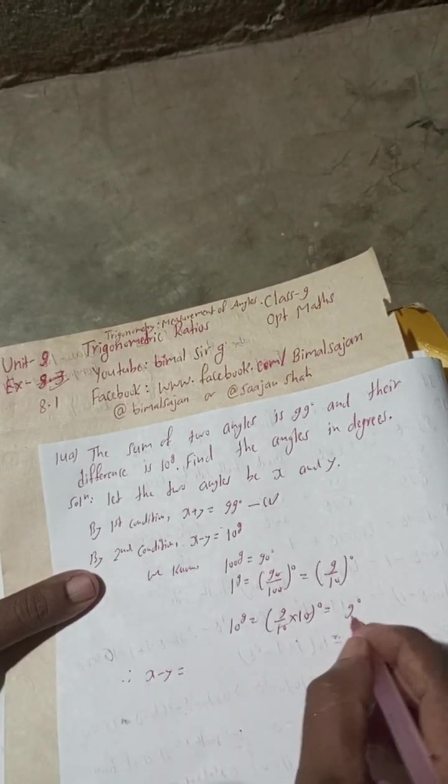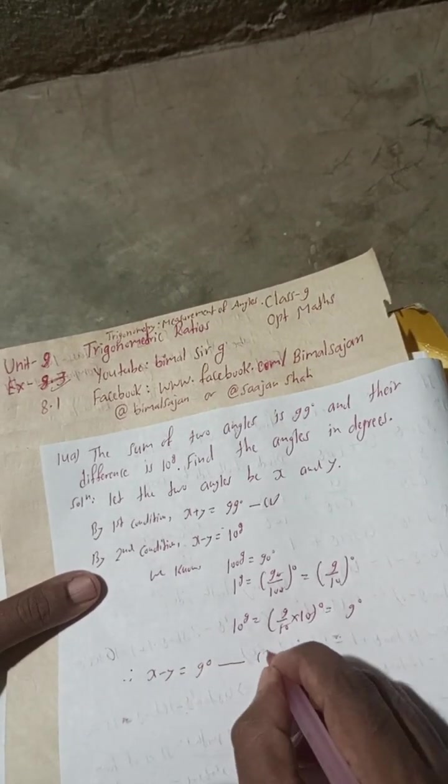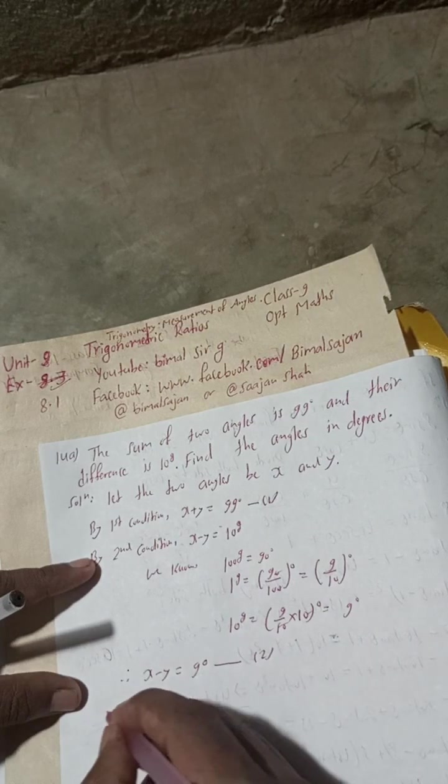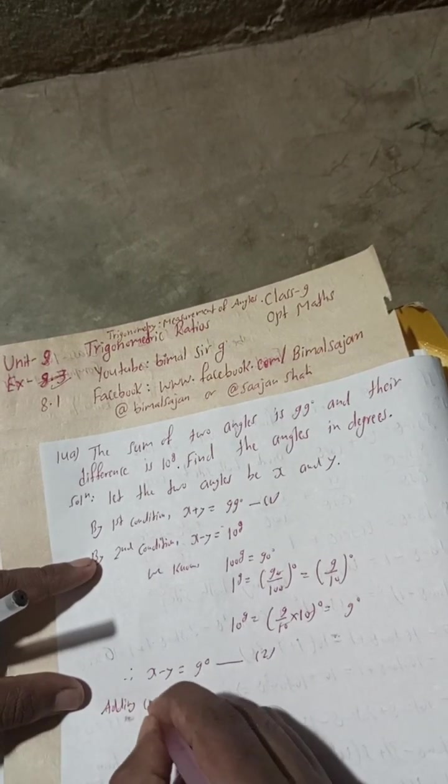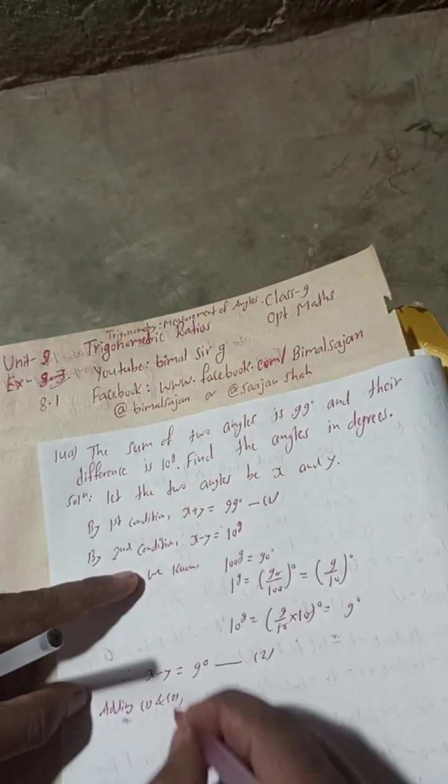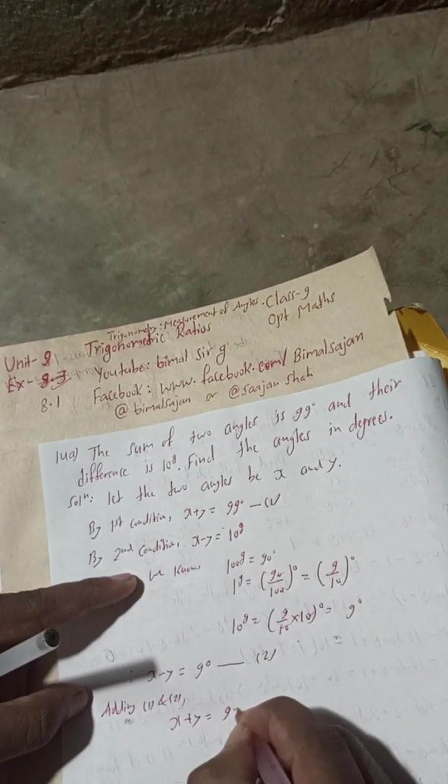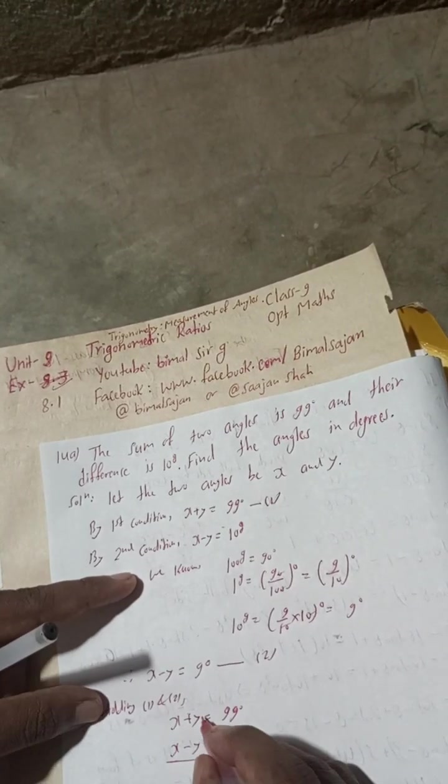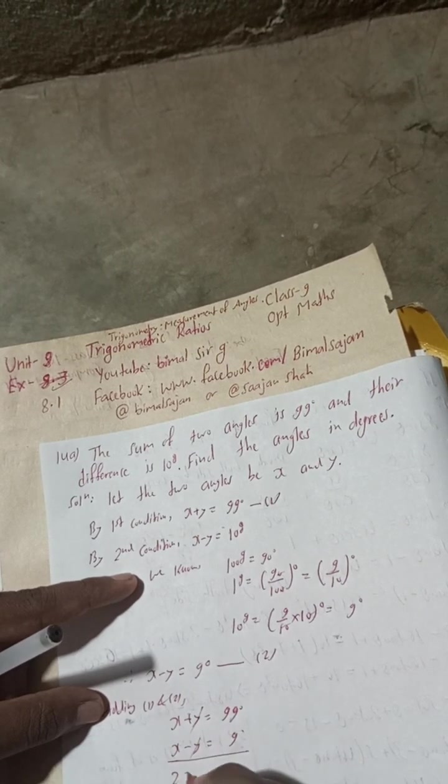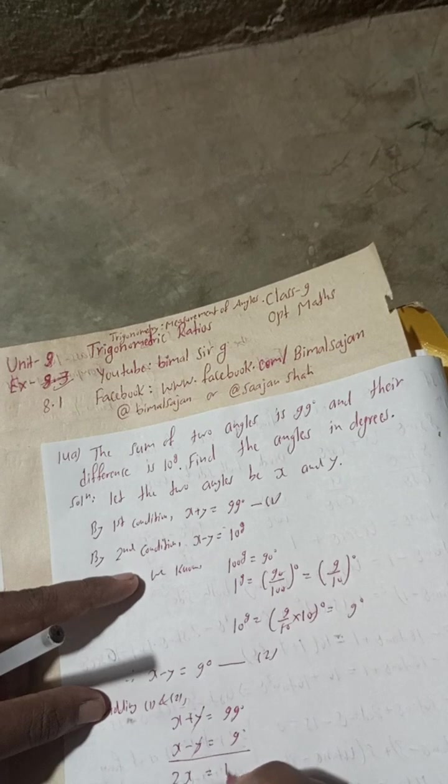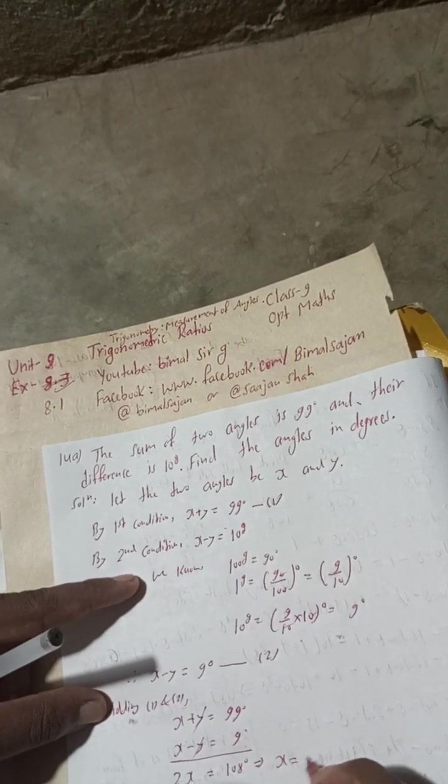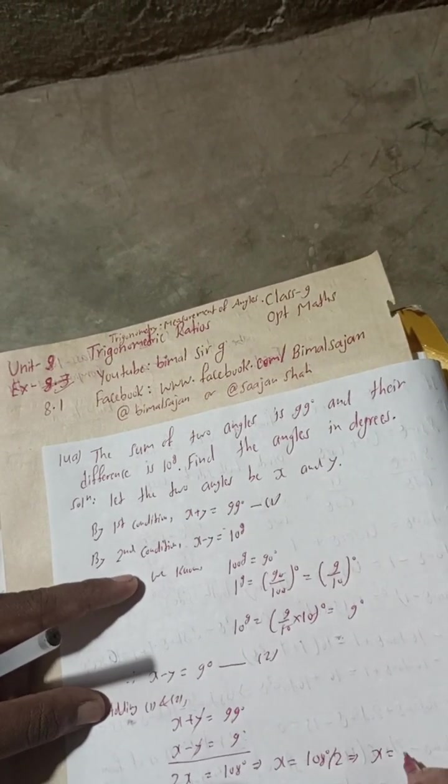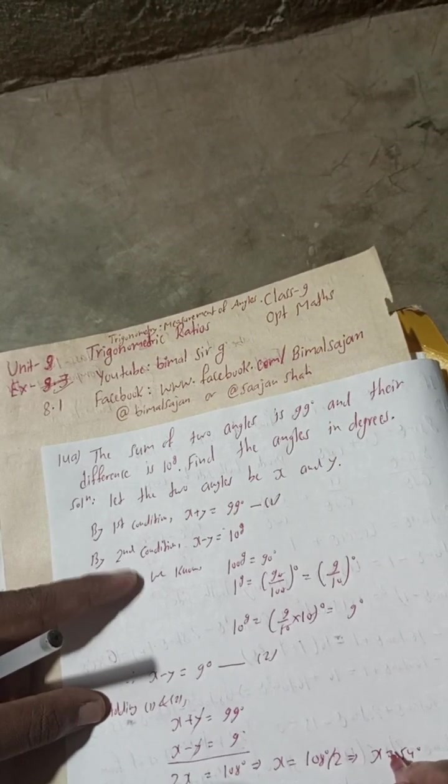Therefore this equation becomes x minus y is equal to 9 degree. This is our equation 2. Adding equation 1 and 2: x plus y is equal to 99 degree and x minus y is equal to 9 degree. Plus y minus y cancel, so 2x is equal to 108 degree. This implies x is equal to 108 divided by 2, which is 54 degree.